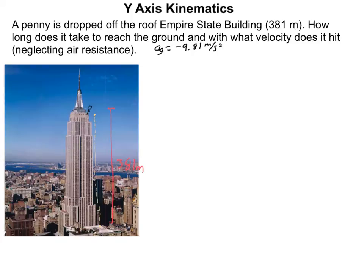The problems work exactly the same. For example, a penny is dropped off the Empire State Building, which is about 381 meters. How long does it take to reach the ground? We're going to be solving for time — this is going to be a T equals problem. Here's your displacement S. And then secondly, what velocity does it hit? So there are two problems here: first, how long does it take, and then secondly, what velocity does it hit?